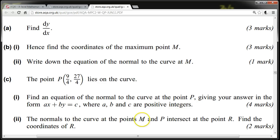The normals to the curve at the points M and P intersect at the point R. Find the coordinates of R.